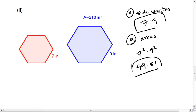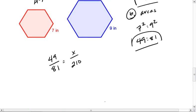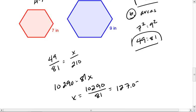This one's a little trickier. I'm going to set up my proportion: 49 to 81 equals the area of the red to the area of the blue. I'm going to cross multiply. I get 49 times 210, which is 10290, equals 81 times X. X equals 10290 over 81, which is about 127.037 inches squared. And that is my area for the red.